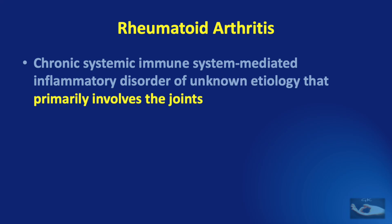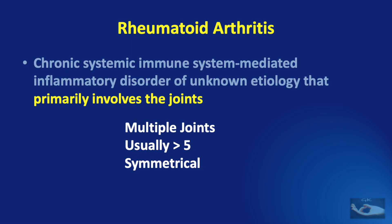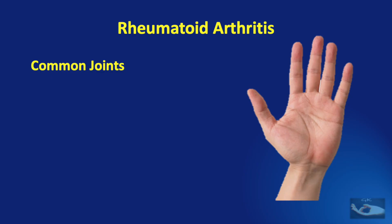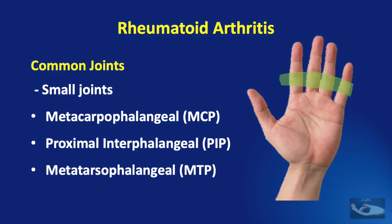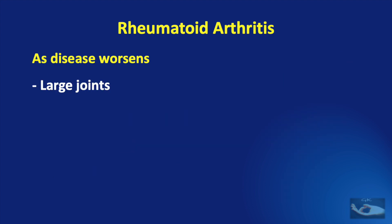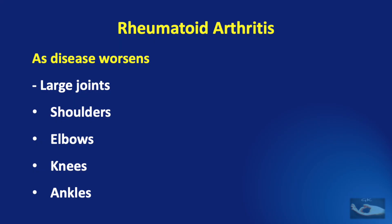The most important involvement of rheumatoid arthritis is the primary involvement of the joints. This is characterized by multiple joint involvement, usually more than five, and symmetrical involvement on both hands or feet. Joint inflammation over time leads to destruction of the joint with loss of cartilage and bone erosions. The common joints affected are the small joints — particularly the metacarpophalangeal joints, proximal interphalangeal joints of the fingers, or the metatarsophalangeal joints of the toes. As the disease progresses, large and proximal joints such as the shoulders, elbows, knees, and ankles can also become involved.